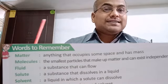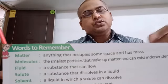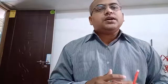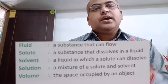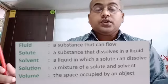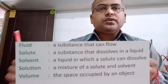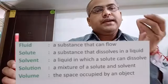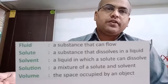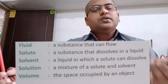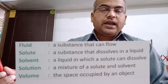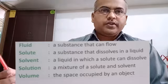Next is solute. A substance that dissolves in a liquid is called a solute. Like sugar — if you put sugar in water, it dissolves in the liquid, so sugar is a solute and water is a solvent. Like salt — if you put salt in water, it dissolves, so salt is a solute and water is a solvent.